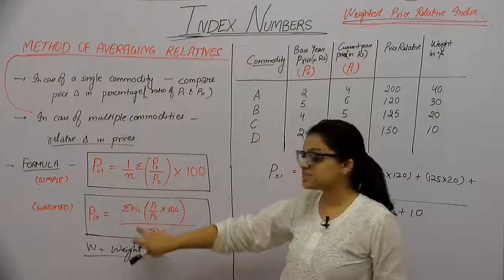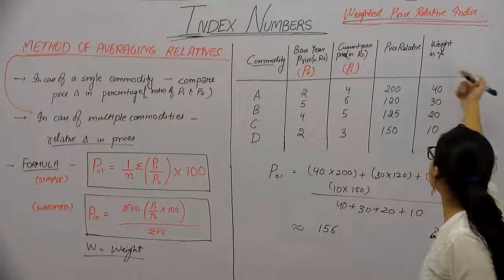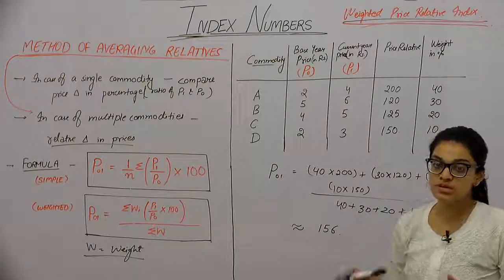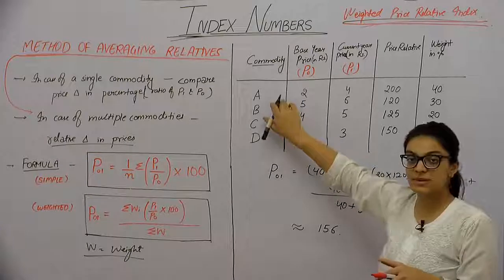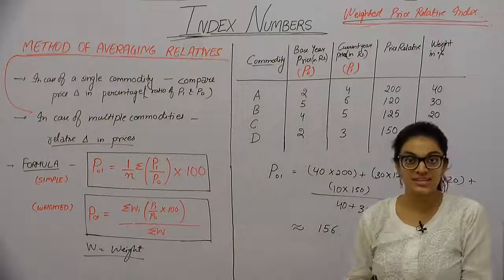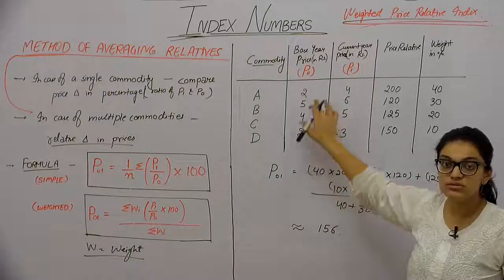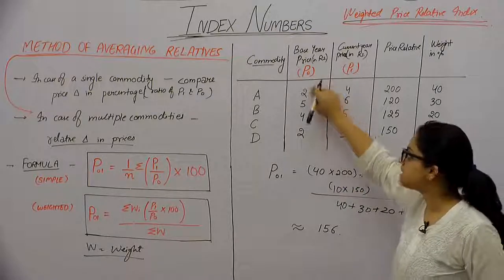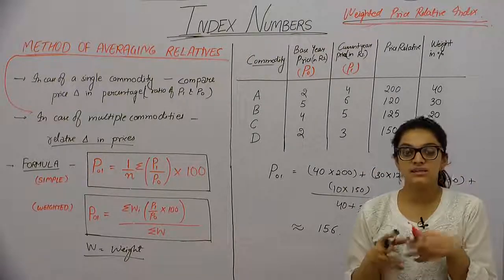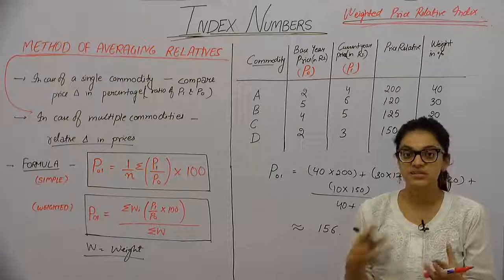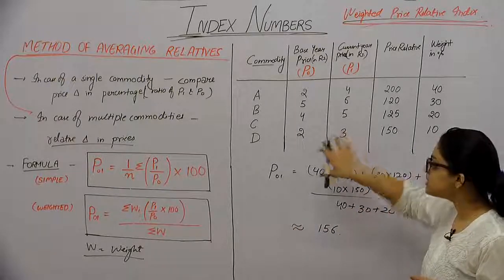That is the simple method. In the weighted method, we introduce a new variable: weight. Weight means that in the base period, for one commodity, how much expenditure was done relative to the expenditure on all other commodities. We add up all expenditure across all commodities, and find what percentage share one commodity's expenditure has — that is, we find one commodity's value in terms of expenditure relative to total expenditure.